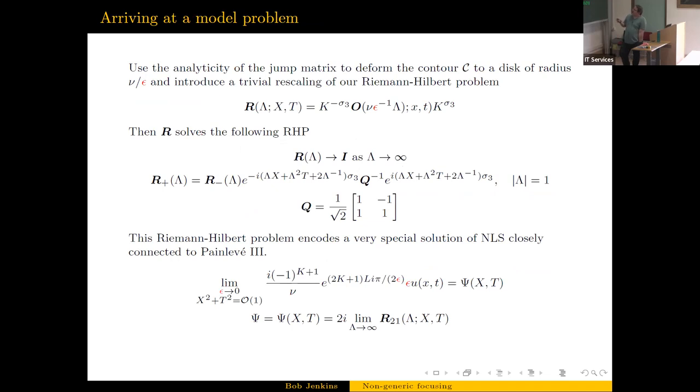As ε goes to zero, you can take a limit and you get a model problem that looks like this. So you have some central factor which is just a constant matrix, then you have the linear dispersion of NLS here, and then you have this 1/Λ term in the rescaled coordinates. In the rescaled coordinates, we choose the size of the disk - the interpolation disk - so in the rescaled plane this is a disk of size one.